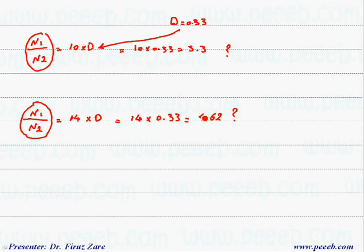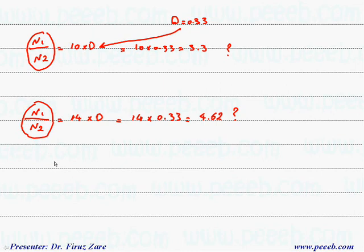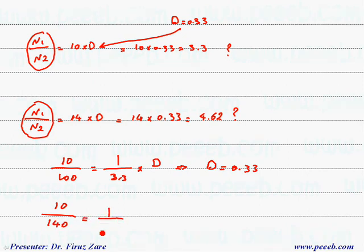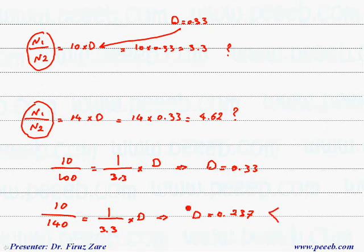Suppose the answer is 3.3. We can find the duty cycle: when input voltage is 100, Vout over Vin equals 1 over 3.3 times duty cycle, giving duty cycle of 0.33, which satisfies the condition. When input voltage is 140, duty cycle equals 0.237. So even when the input voltage fluctuates, the duty cycle remains less than 0.33. That means 3.3 is the maximum turns ratio for the transformer.